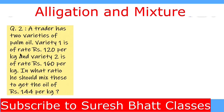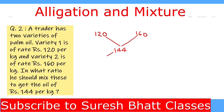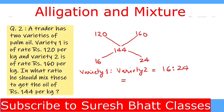Next question: A trader has two varieties of palm oil — variety 1 at rupees 120 per kg and variety 2 at rupees 160 per kg. In what ratio should he mix these to get oil of rupees 144 per kg? Using the rule of allegation, we put the lower price 120 on the left and higher price 160 on the right, with mean price 144 in the middle. 160 minus 144 is 16, and 144 minus 120 is 24. So variety 1 to variety 2 is 16 to 24, which on dividing by 8 gives 2 to 3.